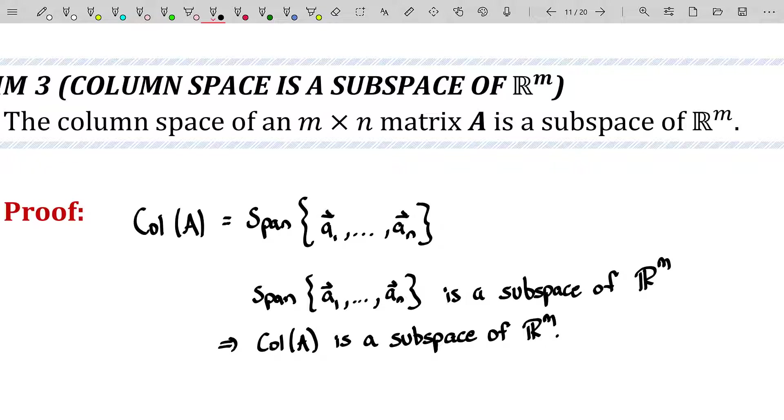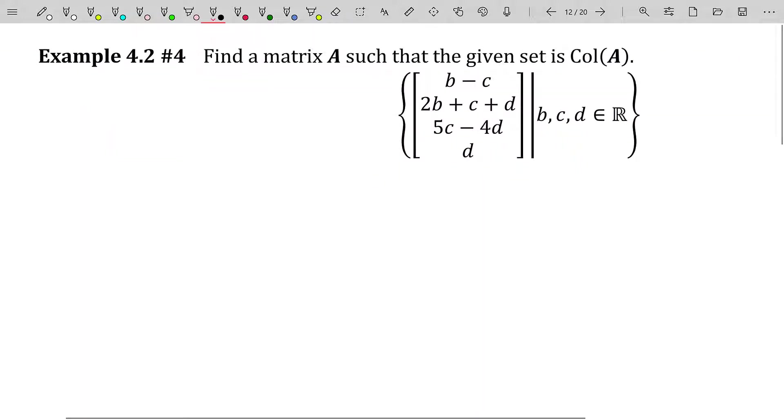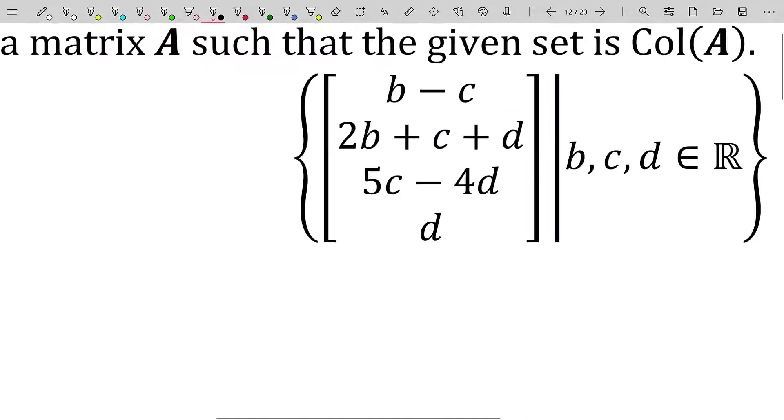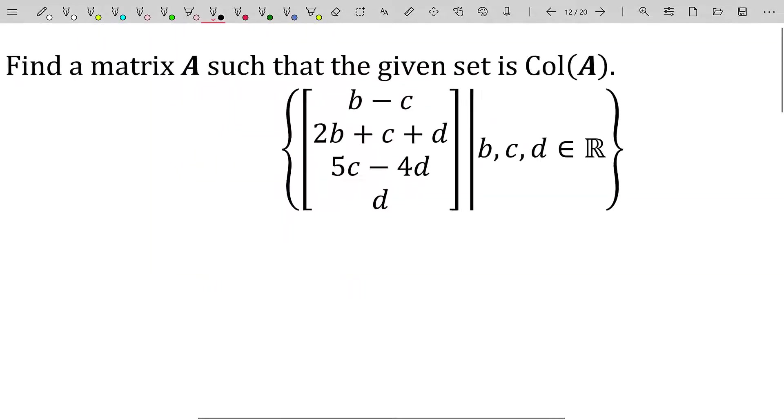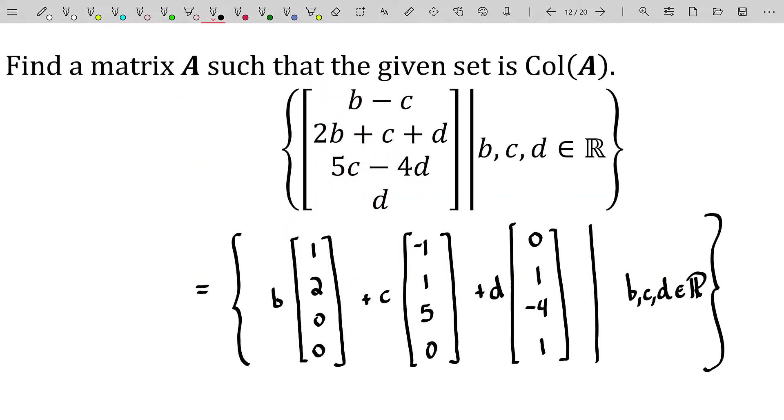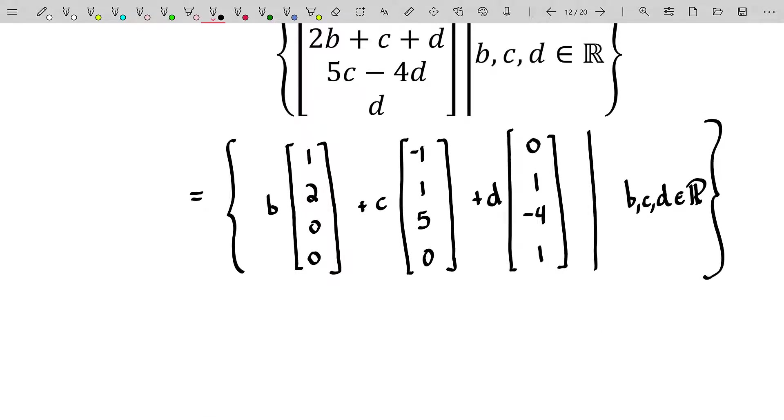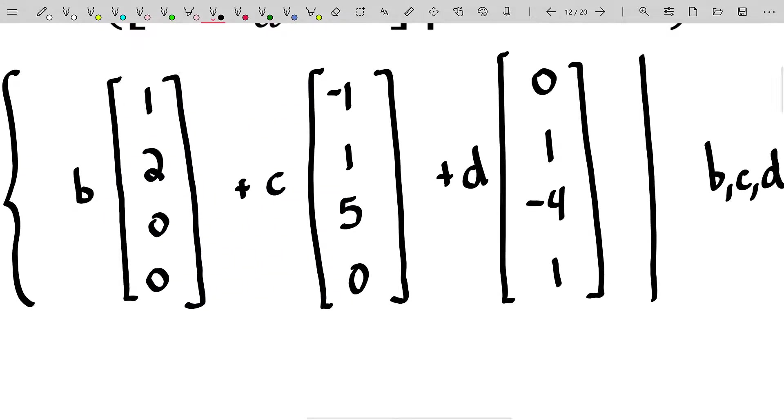Remember, subspaces are also vector spaces, so the column space of A is a vector space as well. Now an example: find a matrix A such that the given set is the column space of A. That is, we want to find a matrix A such that the span of its columns is this set of vectors. A better way to write that set is this: I've now written it as a linear combination of these three special vectors, which form the spanning set.